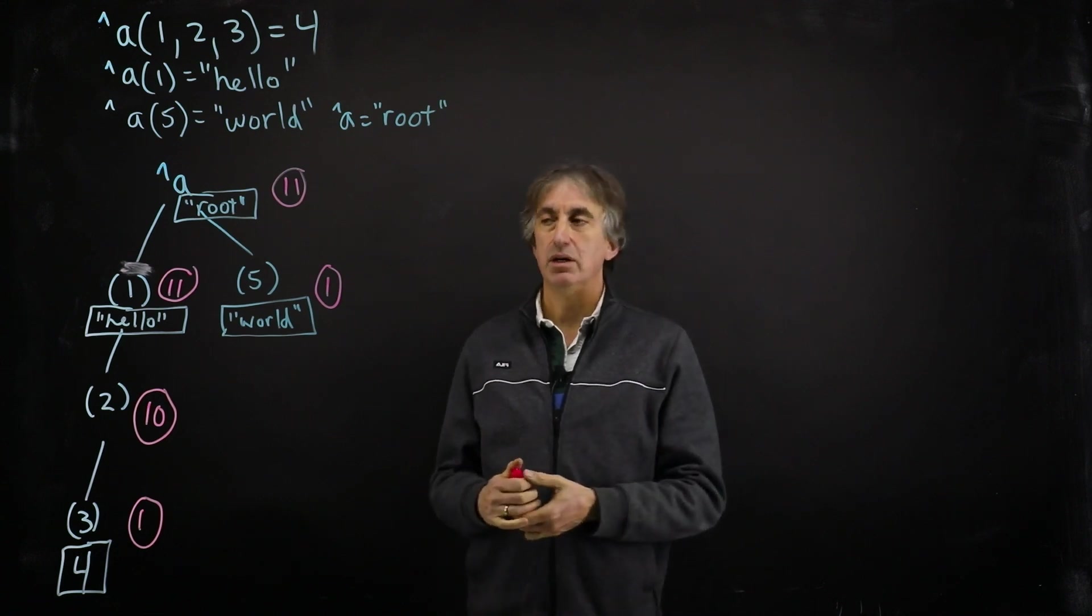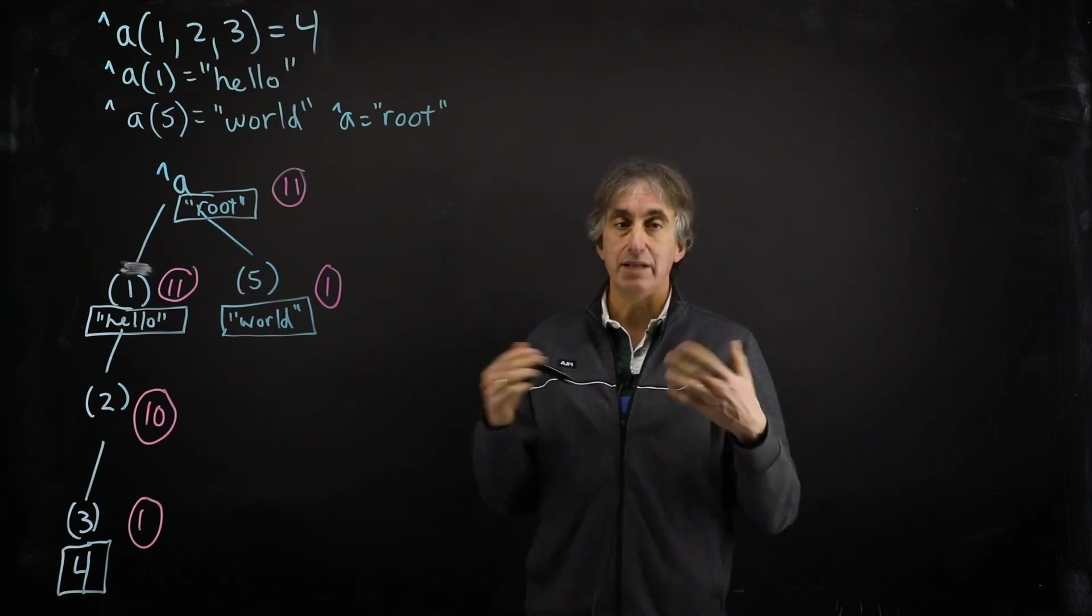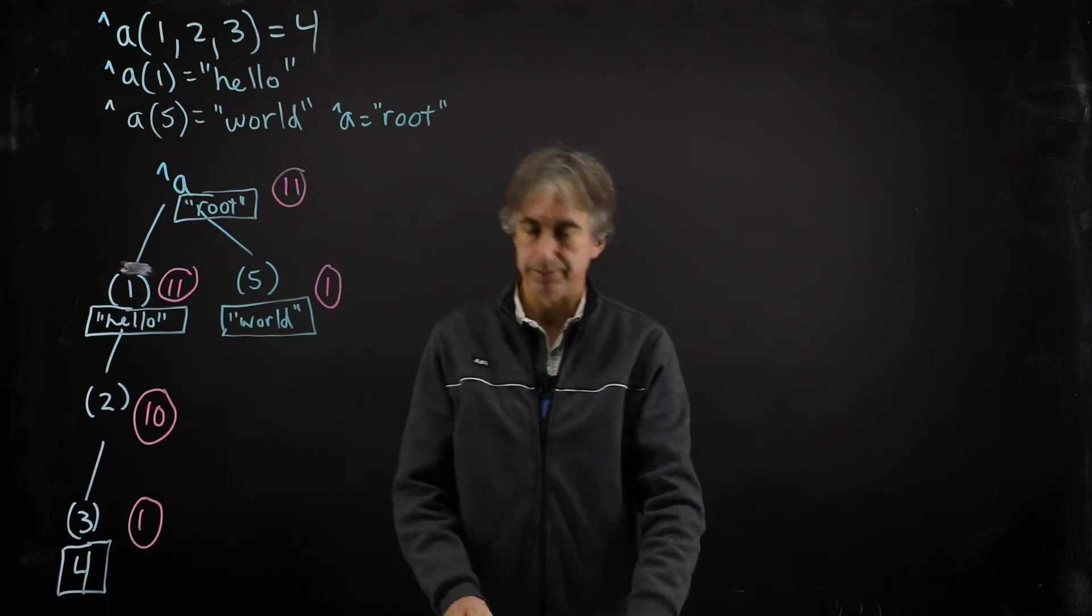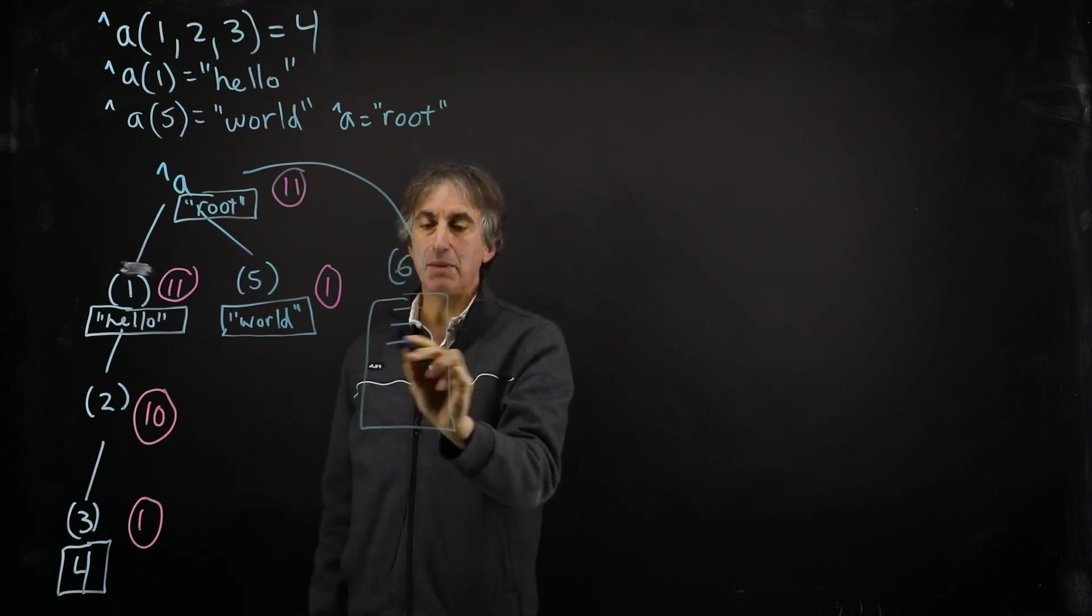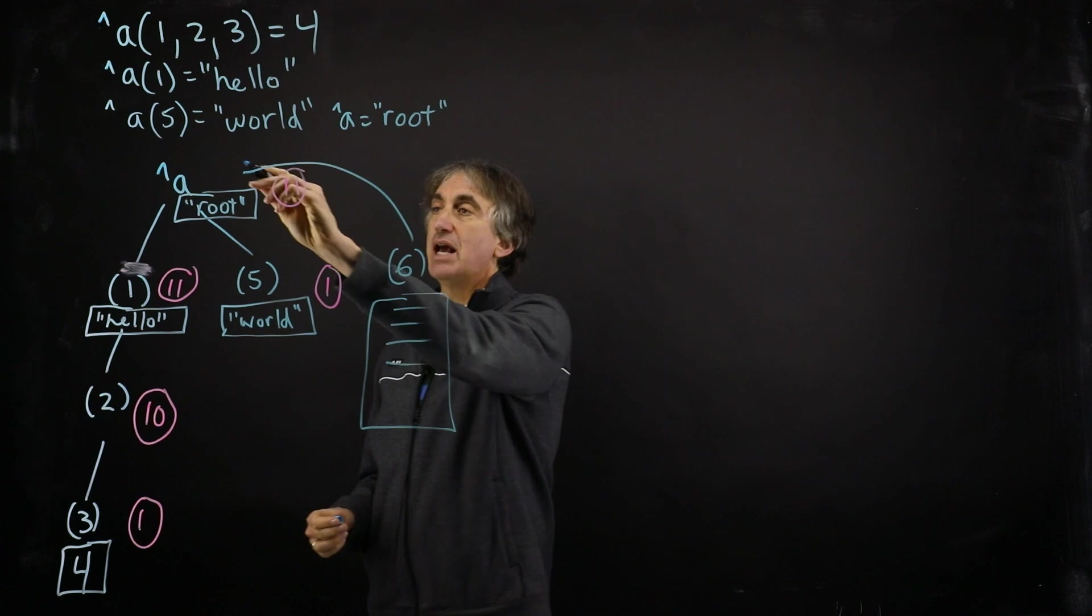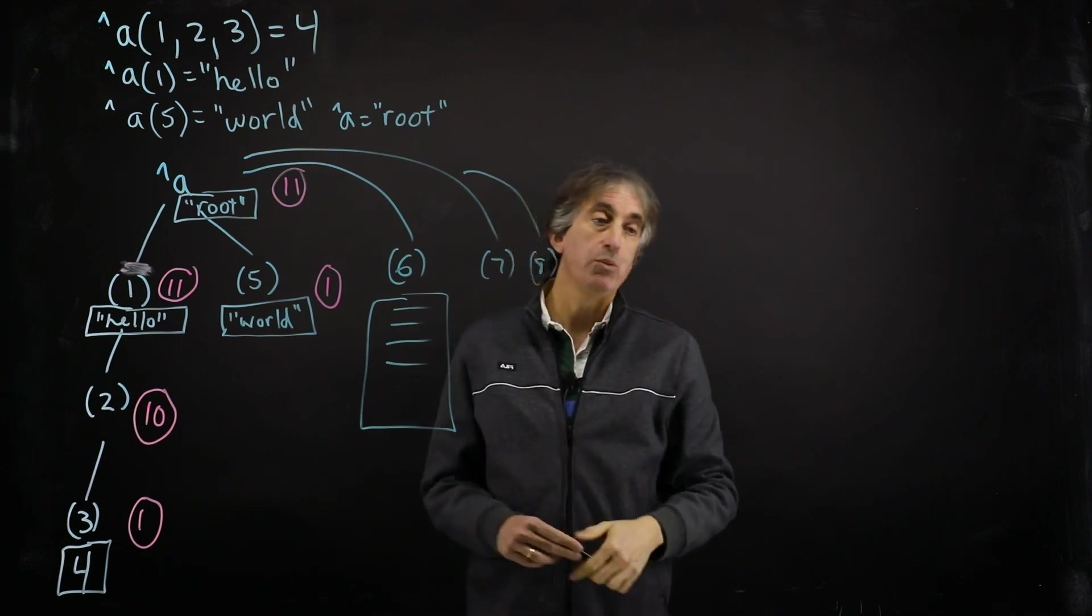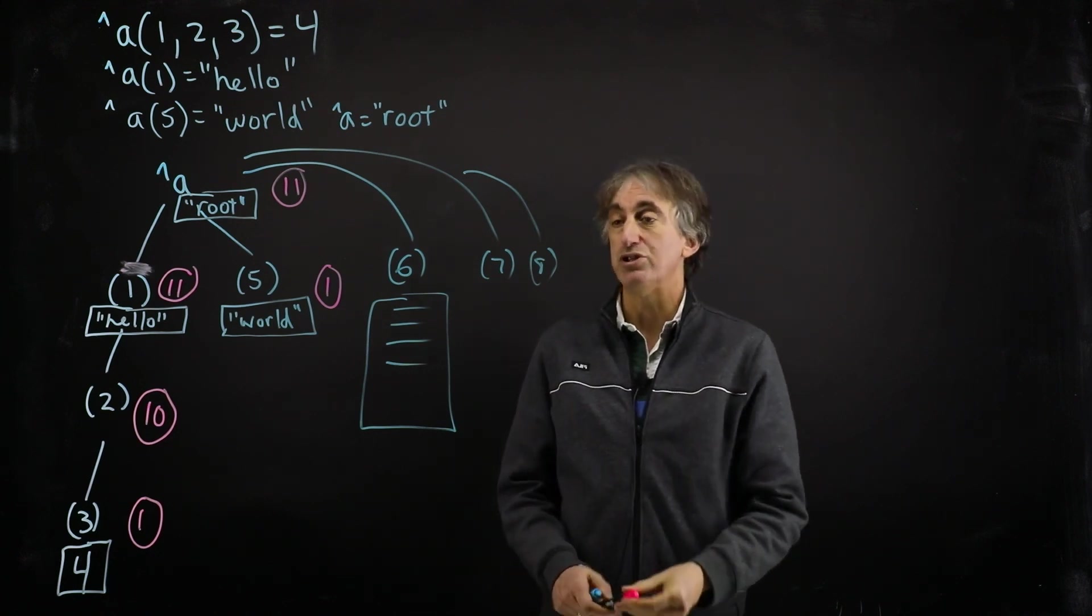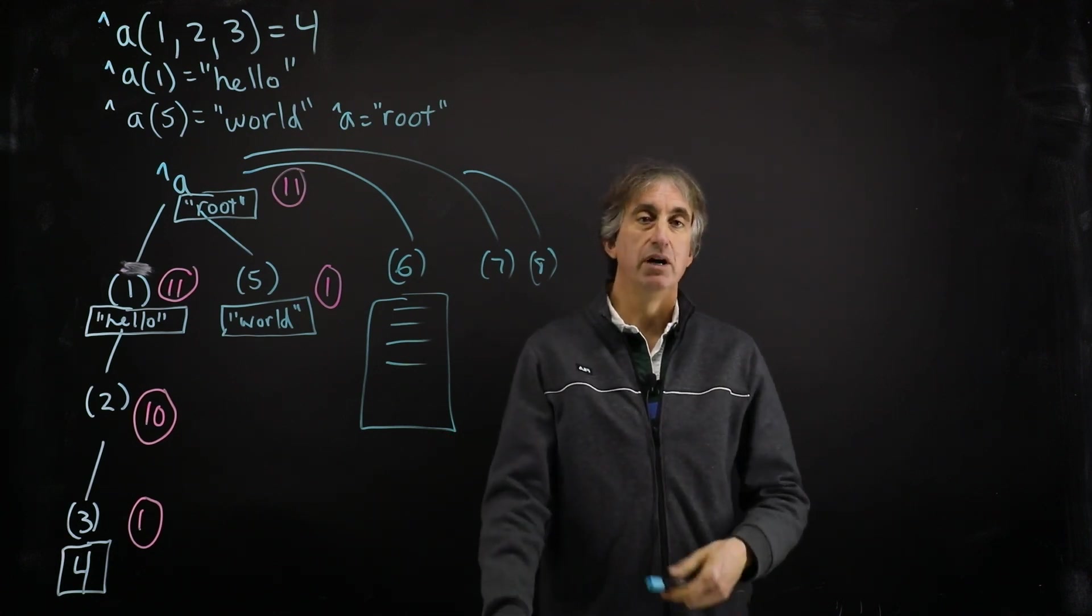The list structure could come into play if the A global was actually part of a real application and we were storing demographic information about people in the global. So we could have a node 6 that's stored in a structured list format, the name, email, date of birth, phone number, et cetera, for a person. And the next person would be stored at node 7 and the next person at node 8 and so on. And we could store hundreds or hundreds of thousands of people in this global. There could be another global where we store hundreds of thousands of appointments and still another global where we store hundreds of thousands of test results.